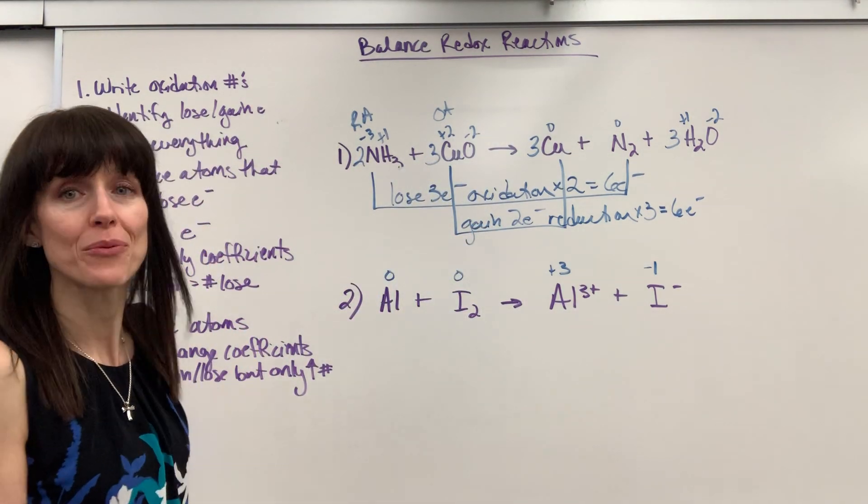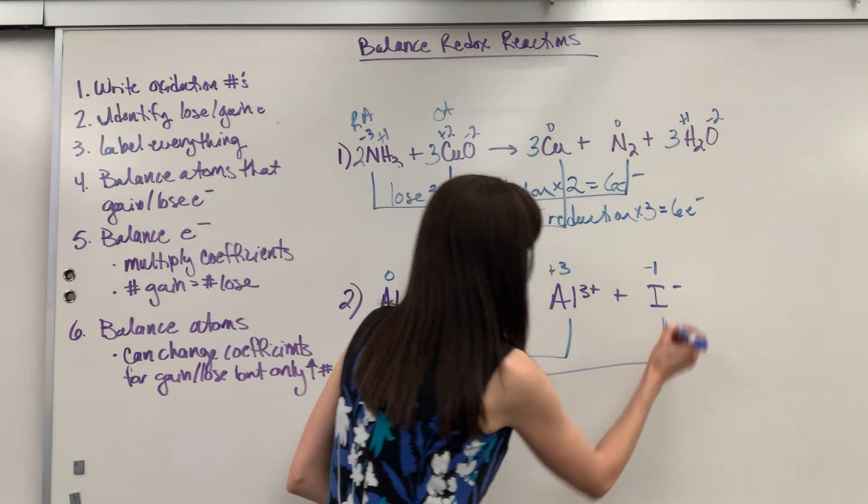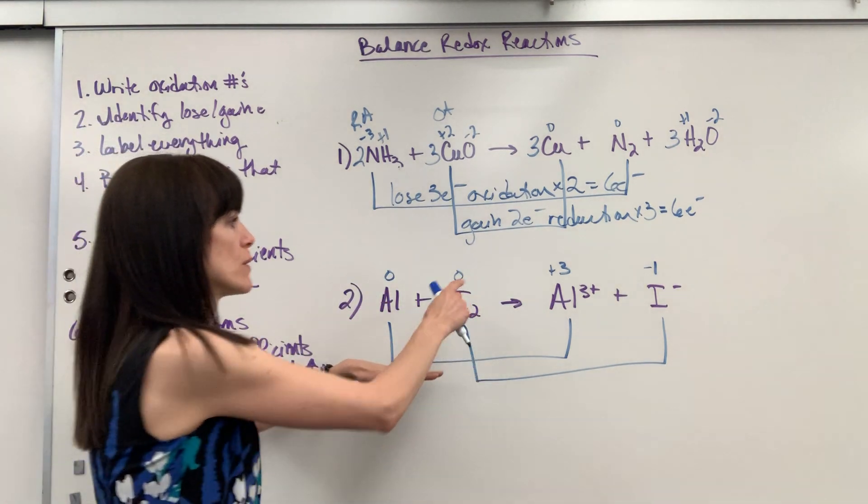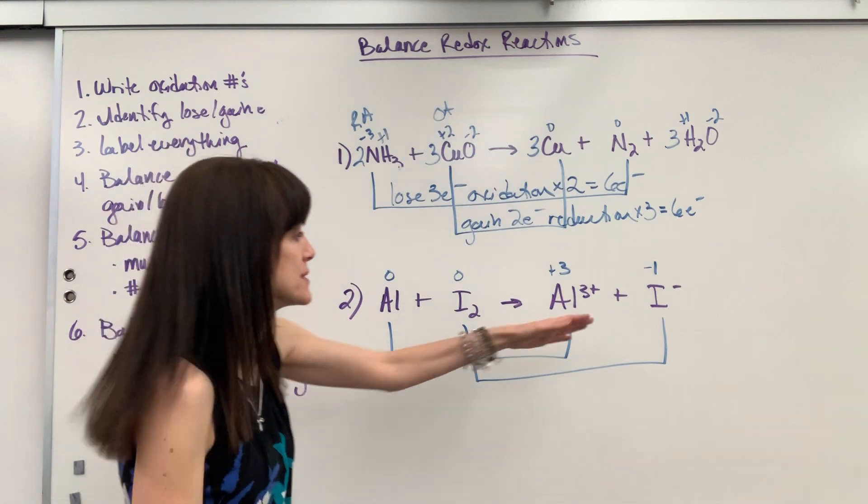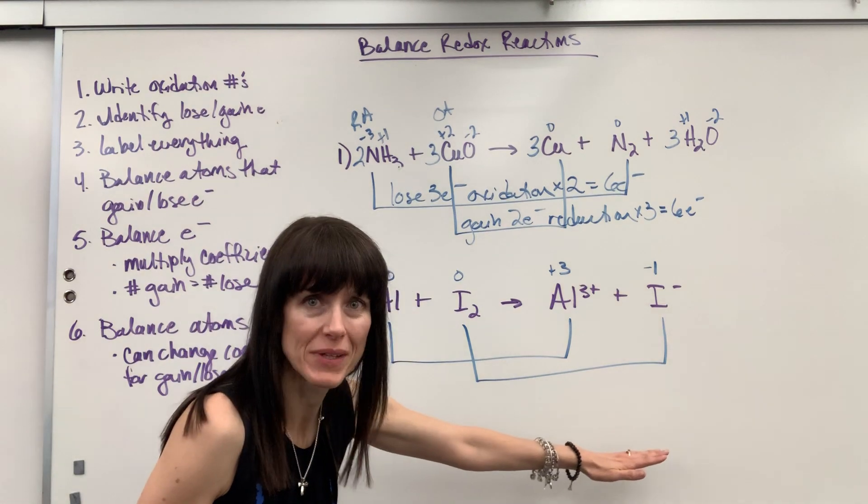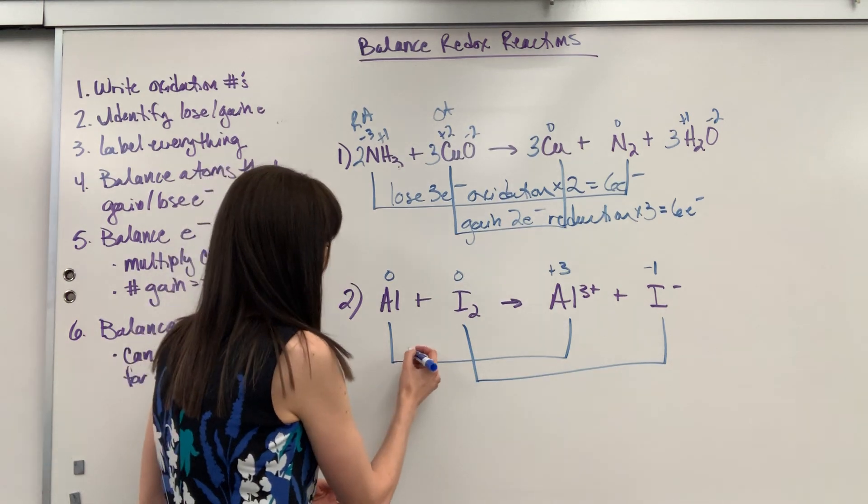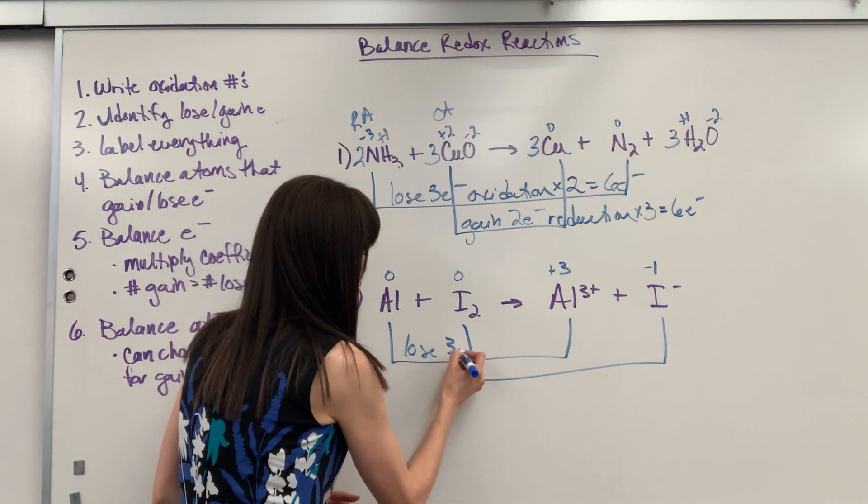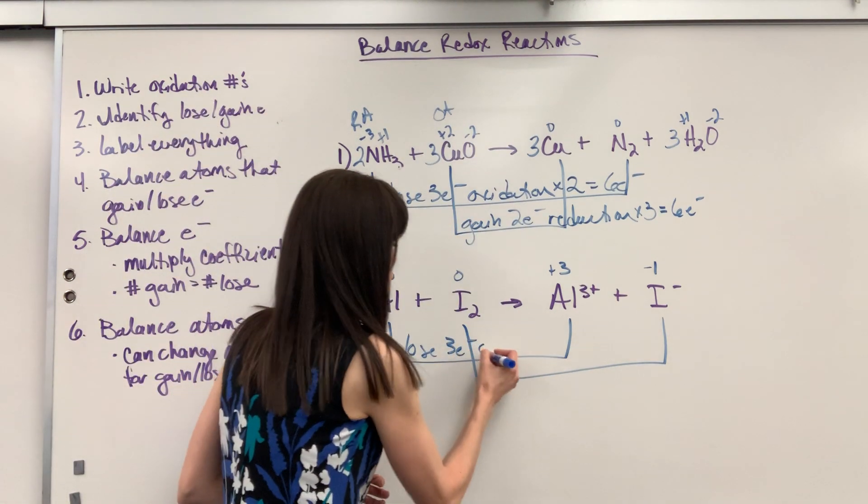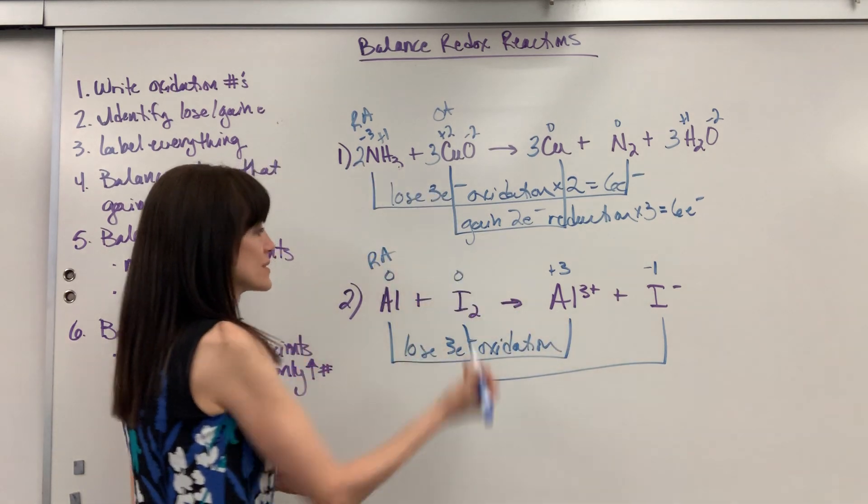We're going to identify what gains loses electrons. Aluminum is going from a zero to a plus three. Iodine is going from a zero to a minus one. So let's start labeling. Aluminum perfect zero goes to a plus three. And remember plus three means it's one two three lost three, down by three. So I'm going from zero to I lost three. What happened? It lost three electrons. So this is going to lose three electrons. Then I do my saying: Leo, lose electrons oxidation, and whatever is oxidized is the reducing agent.